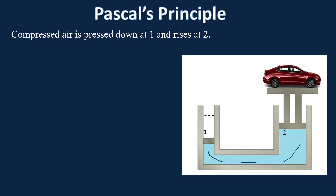At piston one, you're pressing air down. At piston two, you're pressing air up. The thing is, you're pressing a certain mass of air down at piston one and a certain mass of air up at piston two. Due to conservation of mass, that amount of air has to be the same at both pistons. We also have that energy is conserved, because you're putting force on piston one, which means work is being done on piston one — and that equals the work being done on piston two.